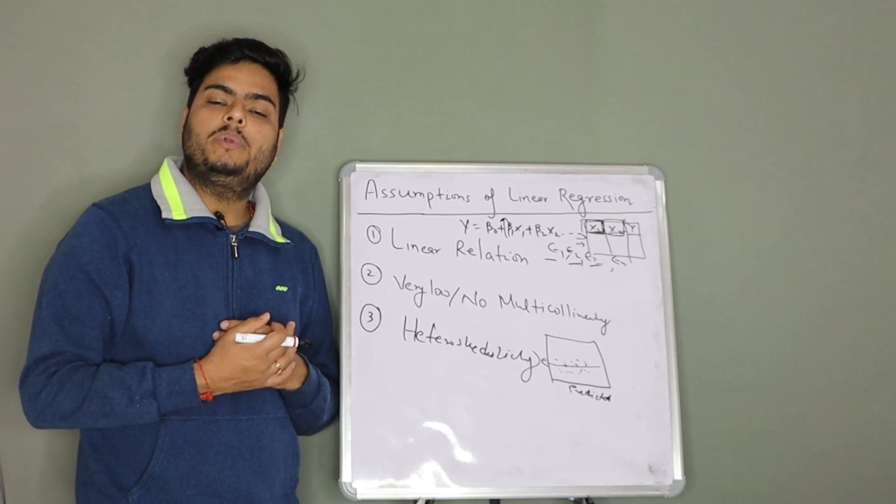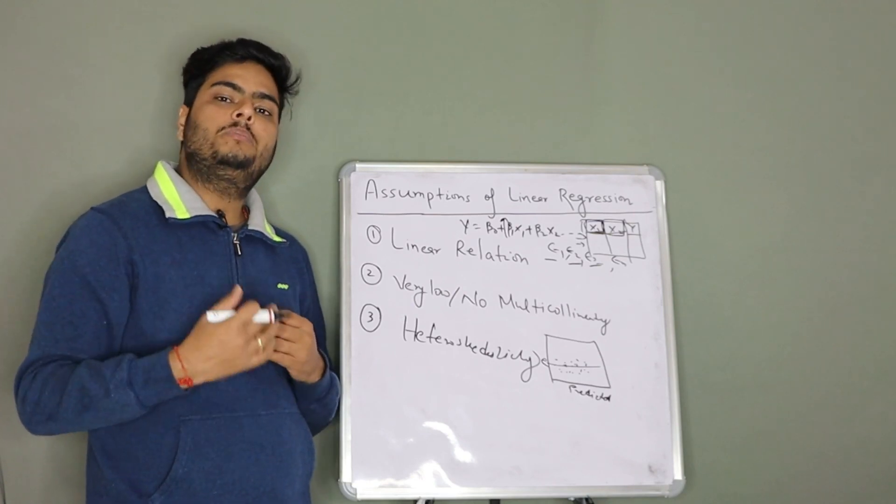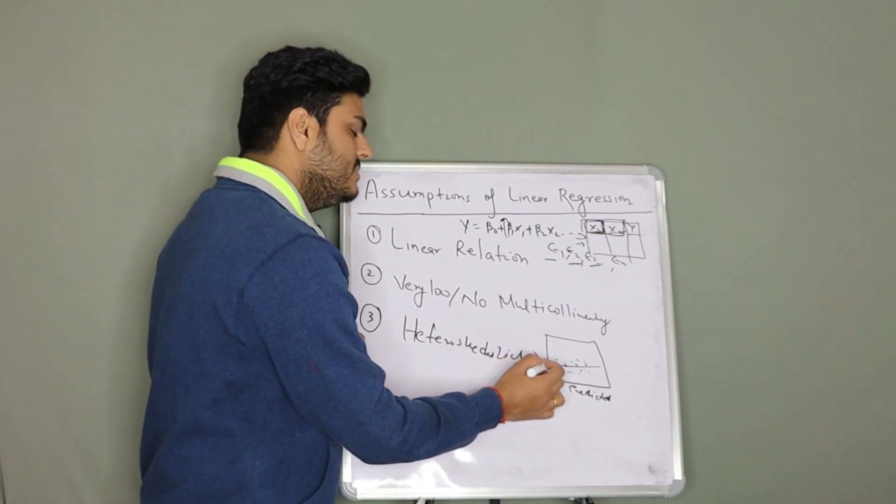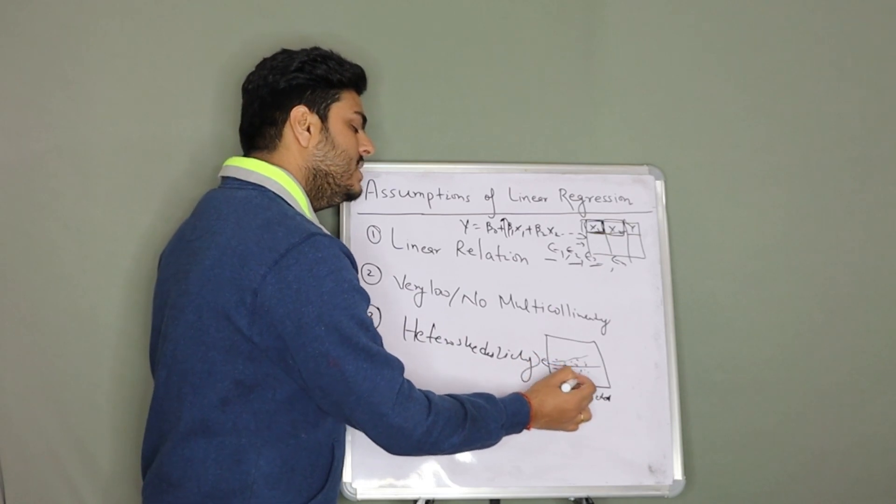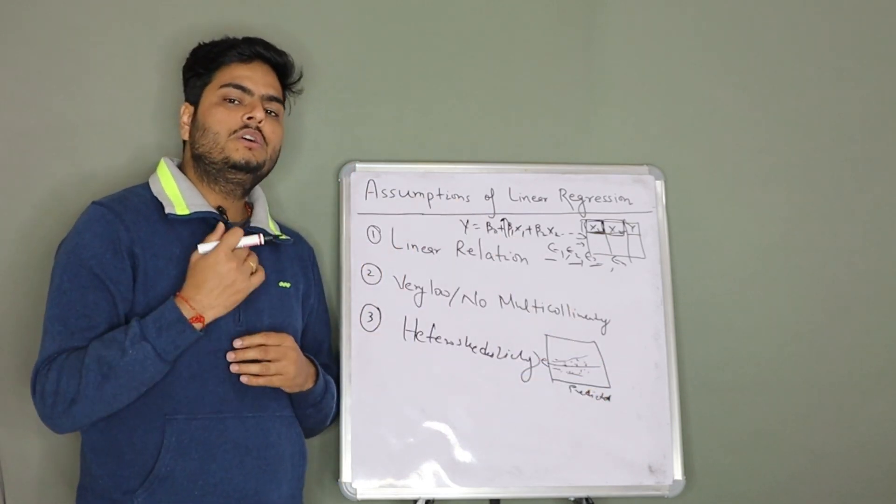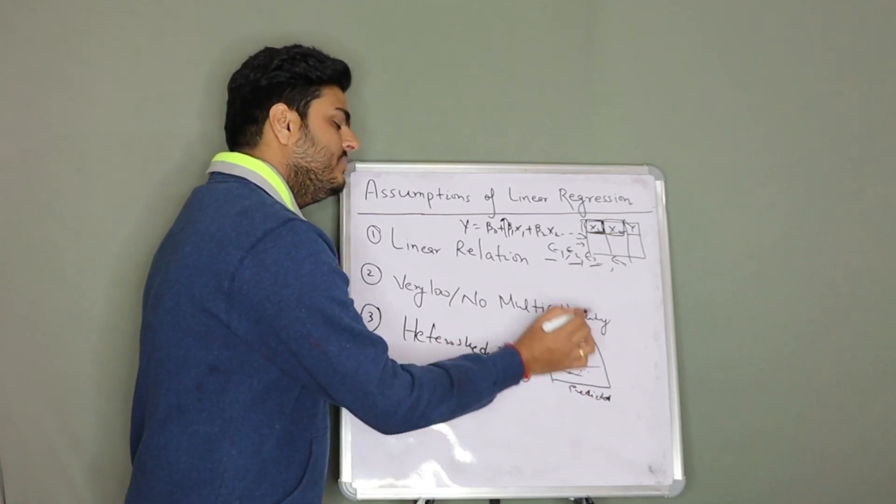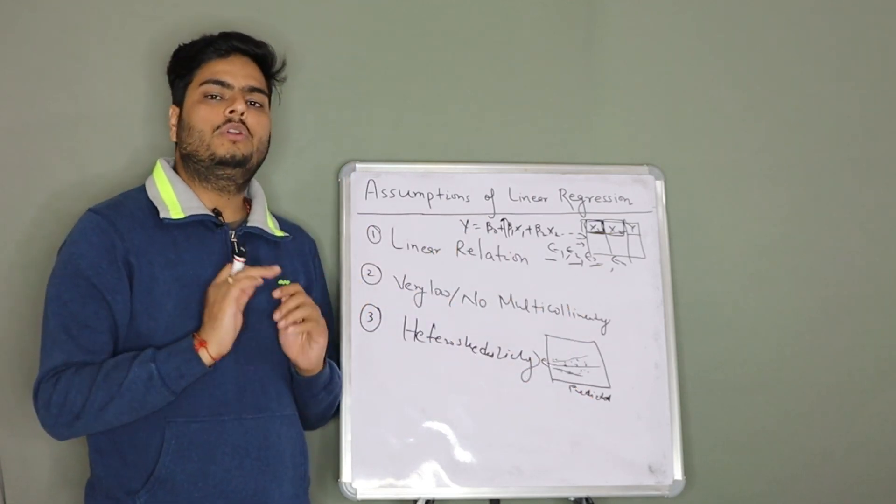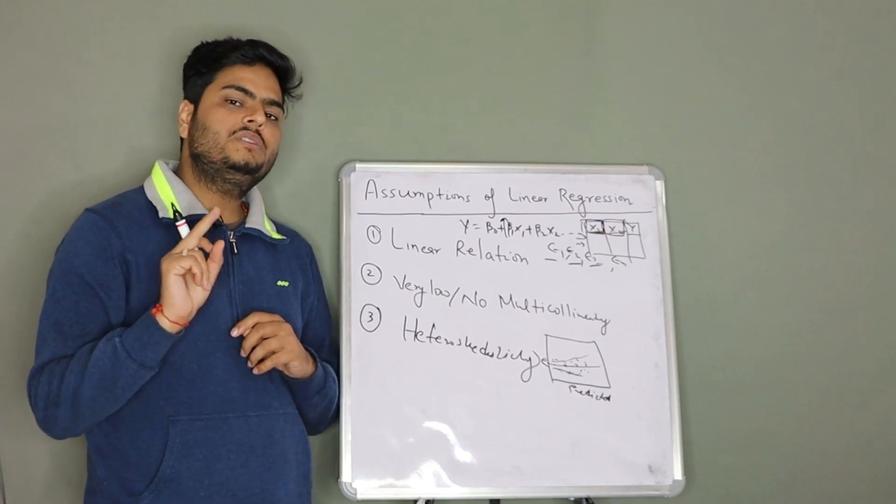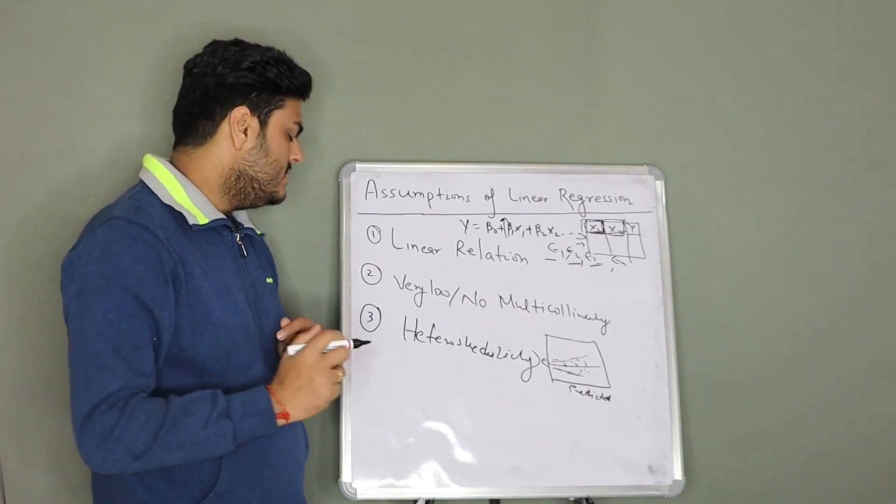If there is a relation coming between your errors and prediction, for example something like this, a funnel kind of shape, this is not a good thing to happen. It should not happen in your data. This phenomenon is called heteroscedasticity. Error should be random for all your predicted values. That is assumption number three.